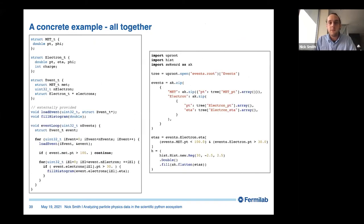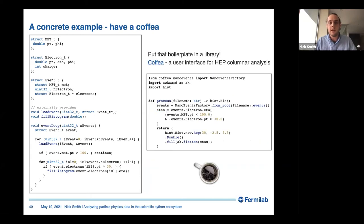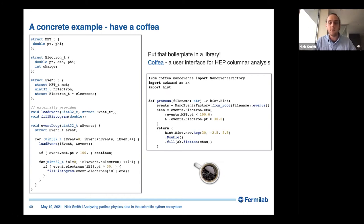Putting that together, we build our events as an awkward array with record structure and jagged structure. The whole event loop becomes fancy indexing: cut on this property, cut on that property, then fill the histogram with the flattened jagged array. You can put all that boilerplate in a library and end up with a very concise function that reproduces what the original loop did. Now we have a scientific Python solution to our problem, and so far it's scaled well to more complex problems and we're having good success getting adoption with this method of processing.